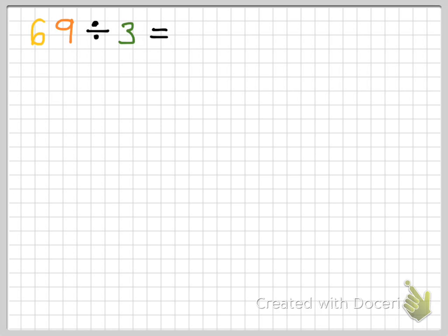So, as you might remember, the distributive property is all about distributing something — giving something out. In this case, we're going to be distributing the divisor to parts of the dividend. I used colors to show you. We have 69 divided by 3. The first thing we're going to do is draw an array to show 3 going into 69, and we're going to break up the 6 and the 9 by place value — 3 going into 60 and 3 going into 9.